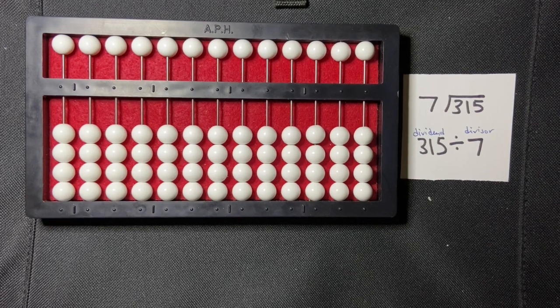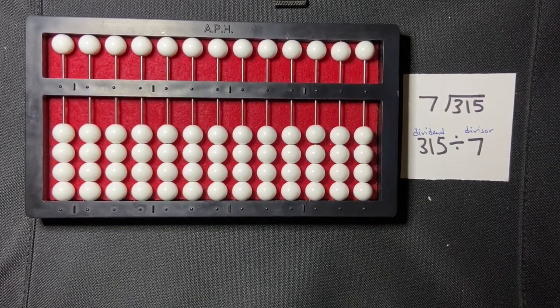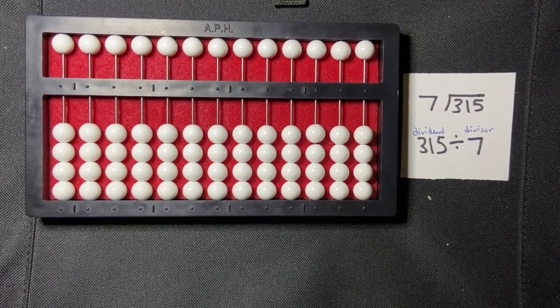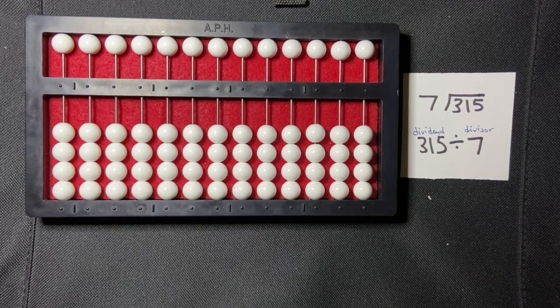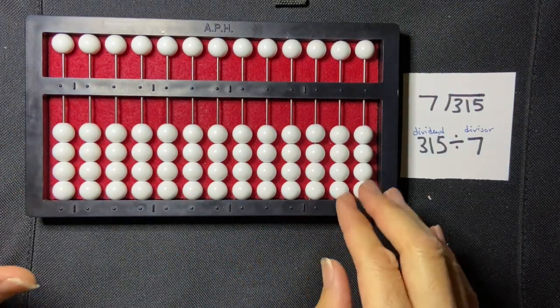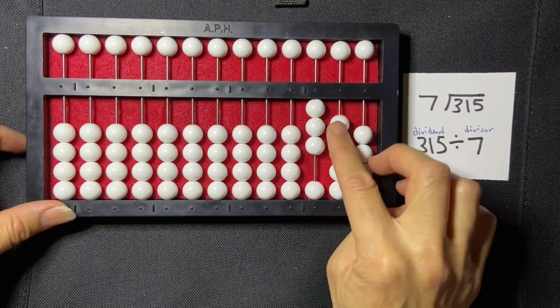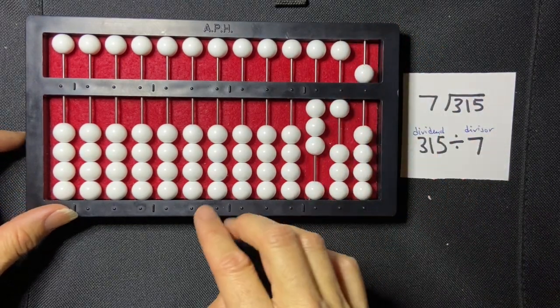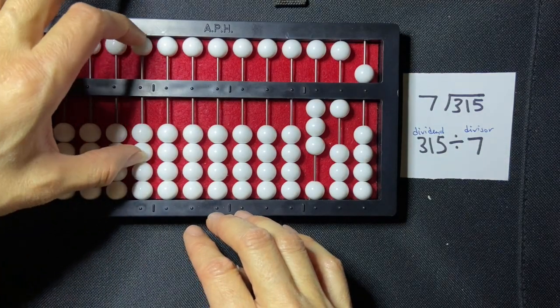Okay, I'm going to do a three-digit dividend and a one-digit divisor using the TSBVI method, which is an indirect method. We're going to set our dividend first on the far right-hand side, and so it's 315. Then I'm going to set my divisor in the billions period in the units column, and that's 7.